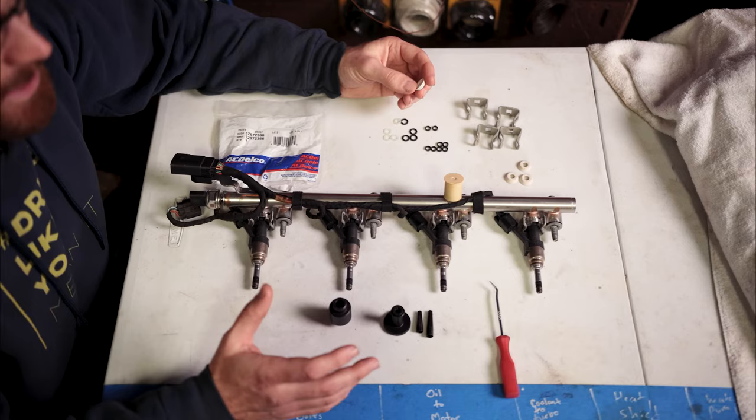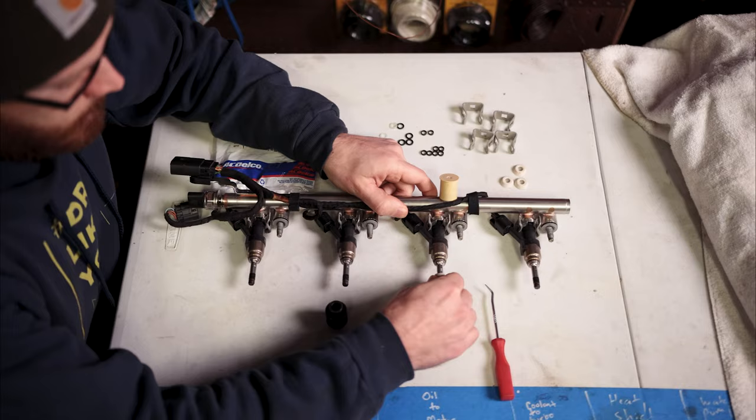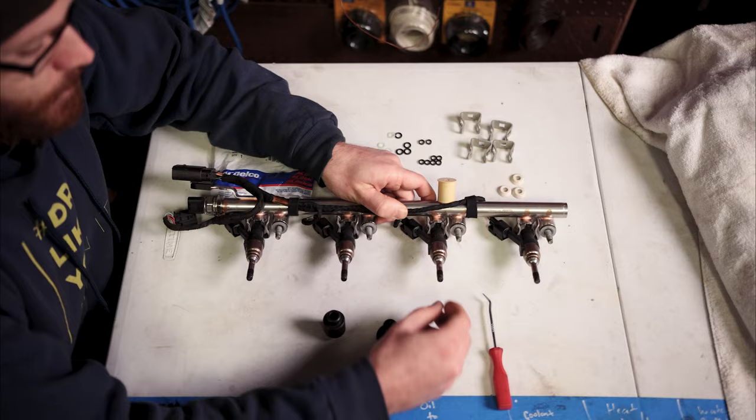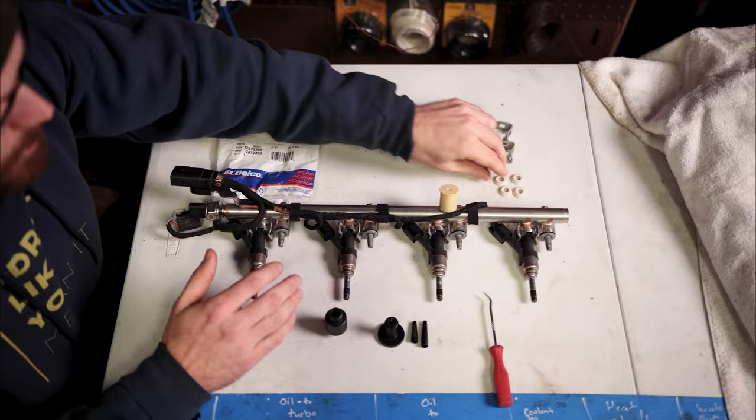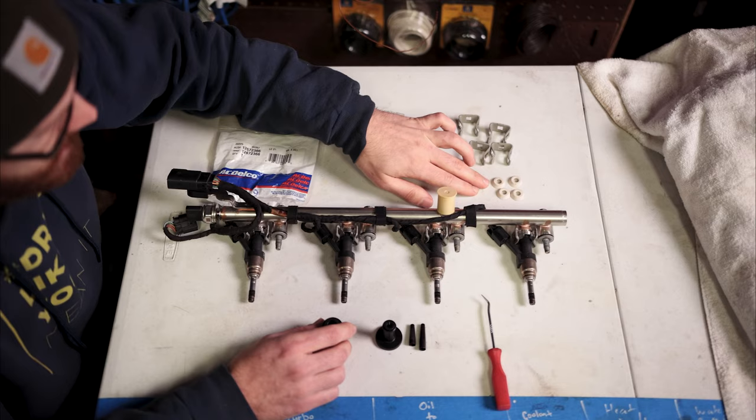What GM did is they realized that their injectors were getting completely corroded and stuck to the heads and almost impossible to get out. So they added this umbrella which is just going to sit down right like that. I talked to a GM tech—he said they still do tend to get stuck over time and can still be a pain to get out, but these should help so you don't have as much of a problem as I did. I did confirm these are compatible with your 14 style injectors, so you can use these even if you have an older injector.